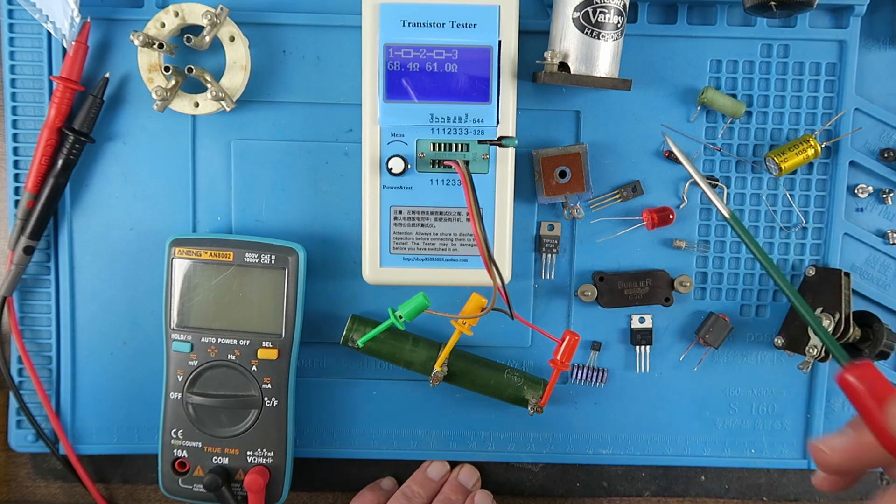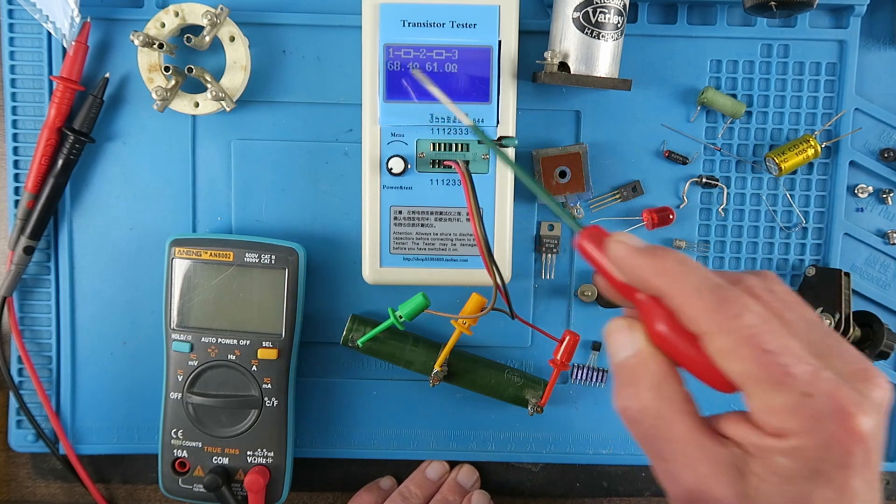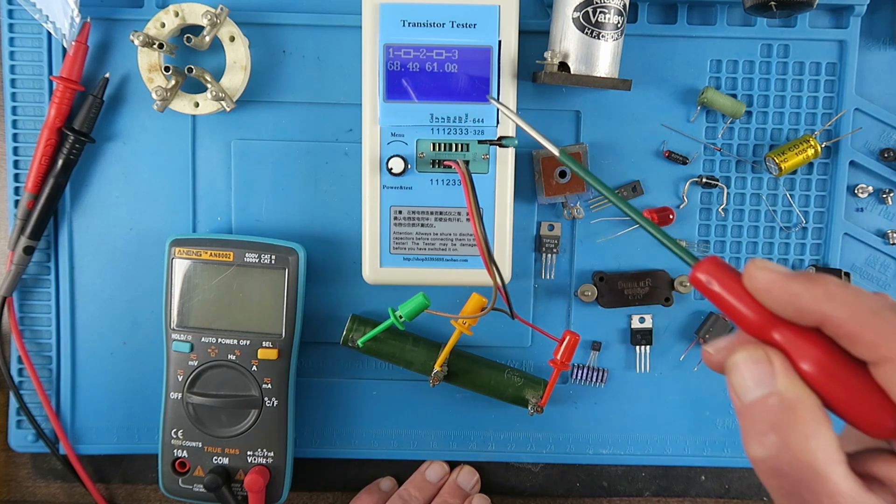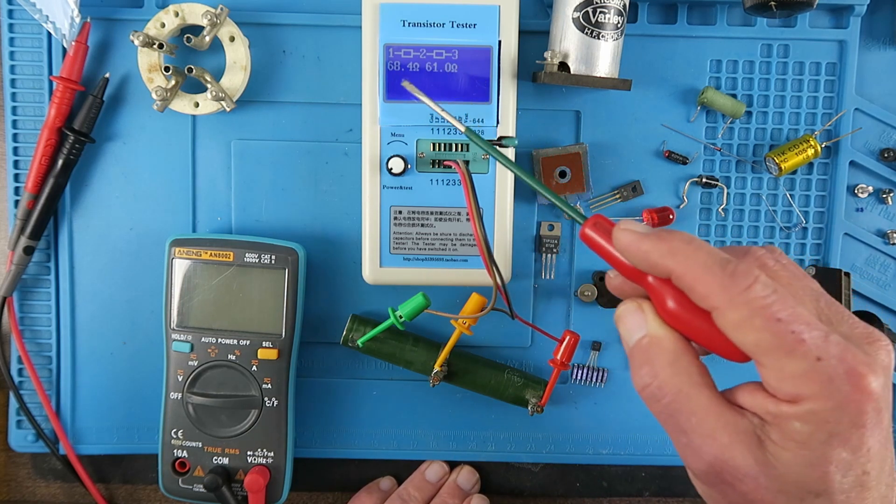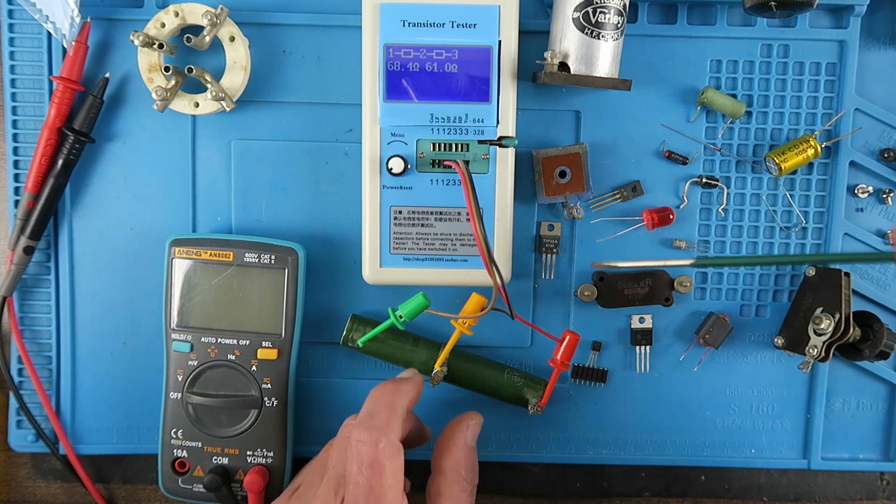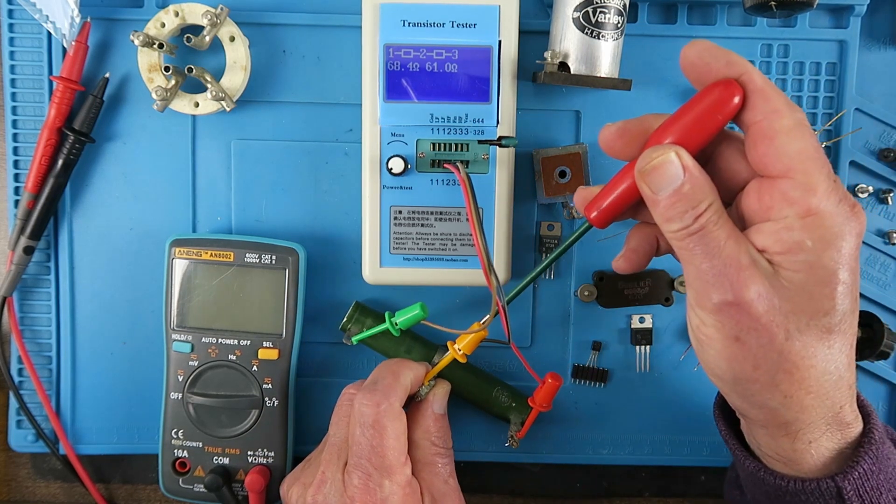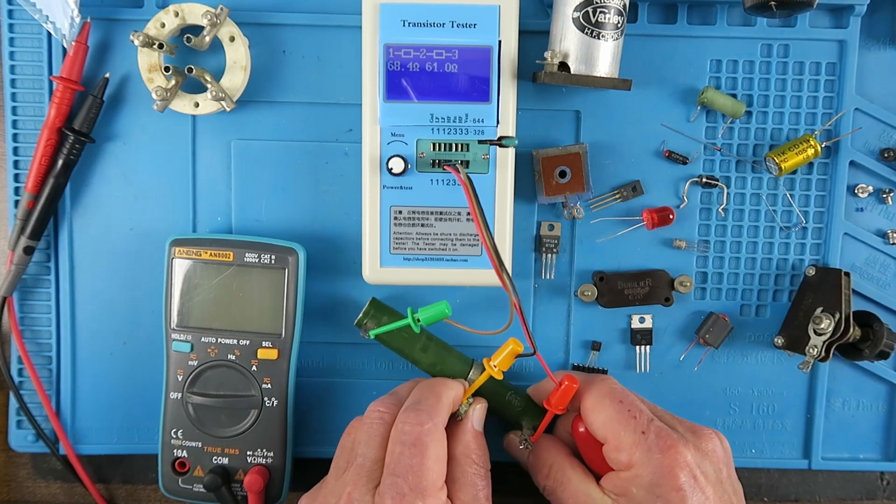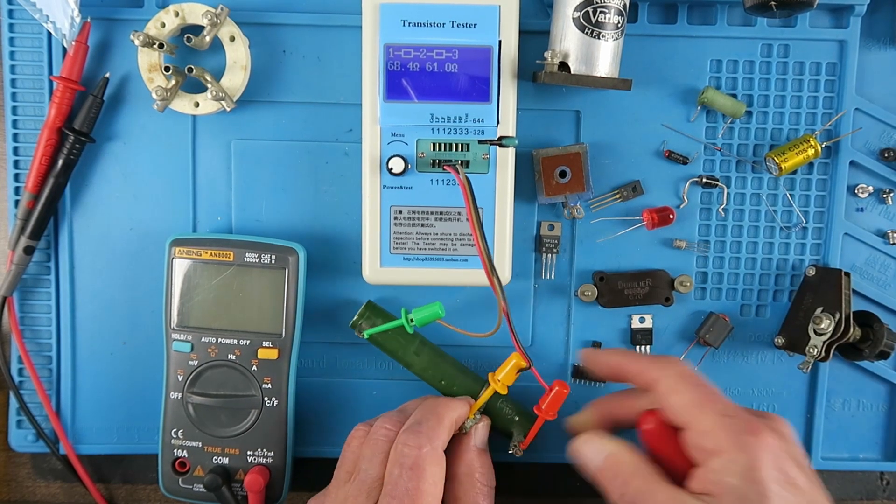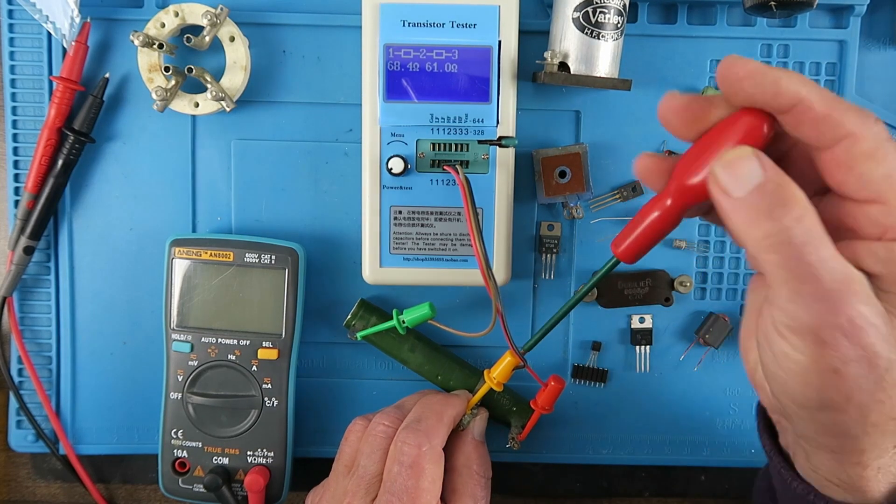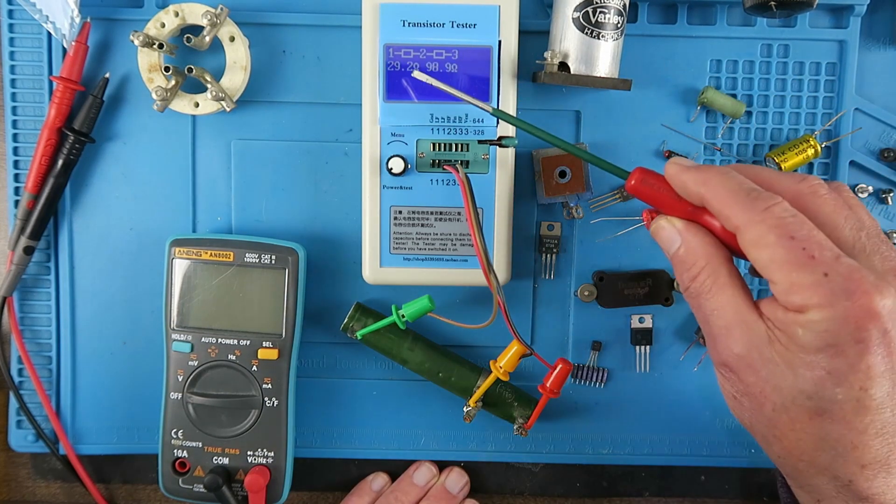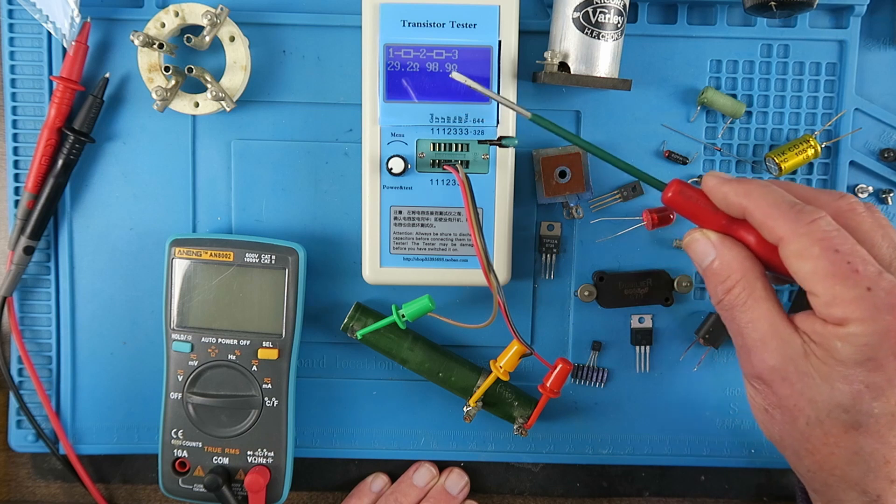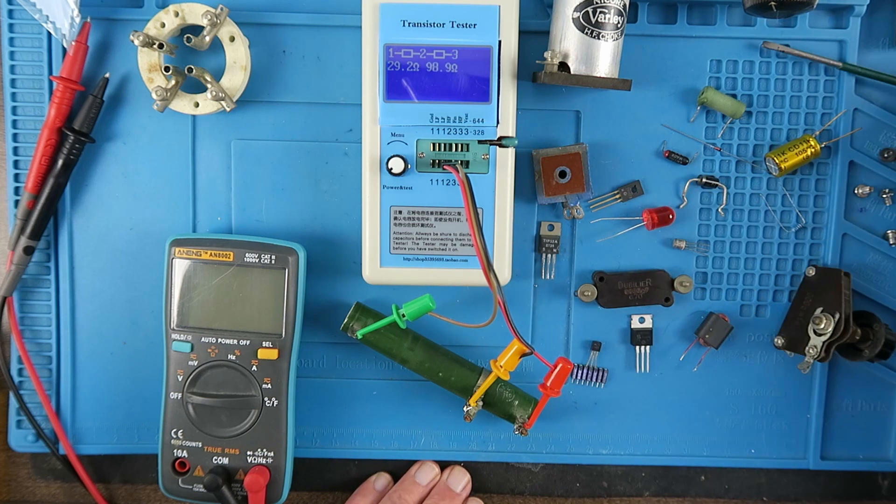With the variable resistor, we can see here the two values for each side of the component. So 68 ohms on one side, 61 on the other. If we make a move on the slider, move it up towards this end, we can now see there's only 29 ohms on one side and 98 on the other. That's a useful check for variable resistors.